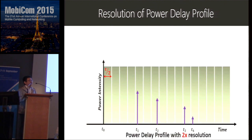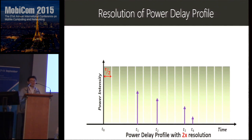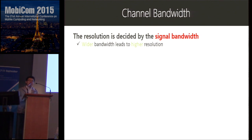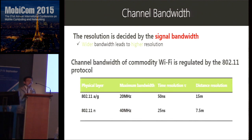If we could double the resolution of the power delay profile, no information would be lost. To sense the physical world more precisely, we want a high-resolution power delay profile. According to theory, the resolution is determined by the signal bandwidth — the wider the bandwidth, the higher the resolution. So we want to transmit a signal with very wide bandwidth to sense the physical world accurately.